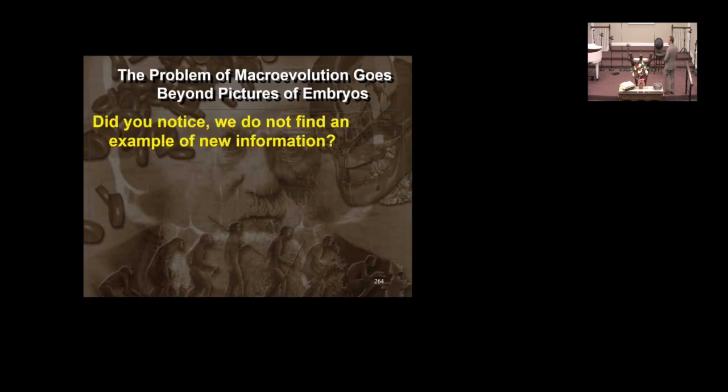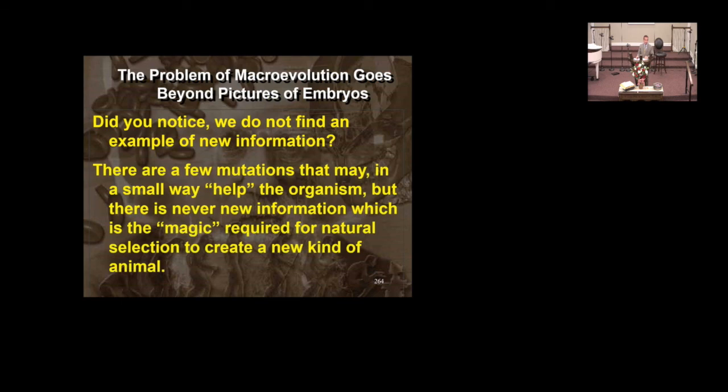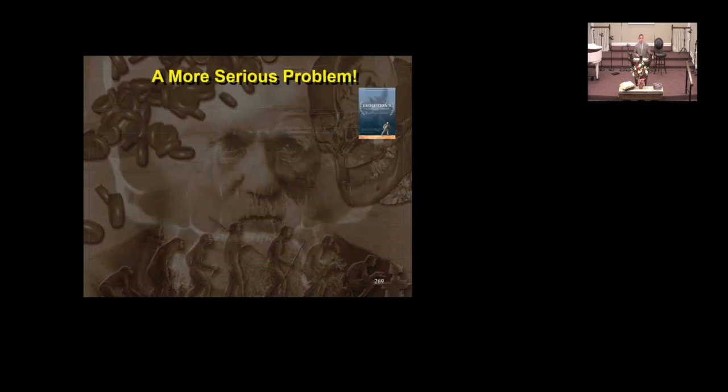So the problems. In all of these examples, one thing should catch your attention. There's no new information. There's damage to information, there's mutations, but there's no new information. Equally, these mutated cells, their information system is damaged. They can't compete with their parent cells when put back in the same environment. They're an injured species, but there's no information, there's no evolution. There are a few mutations that may in some way help an organism. But this is not the road, this is not the magic required for natural selection to convert one animal form into another.